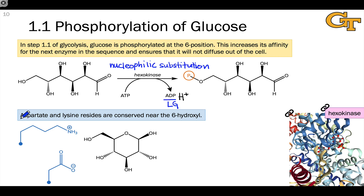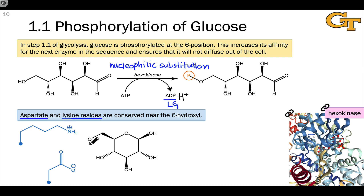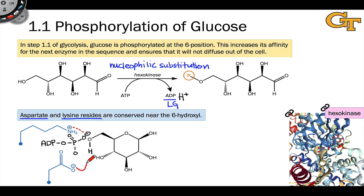One thing we find in hexokinase enzymes across different organisms is the conservation of aspartate and lysine residues in the active site. The enzyme needs to do two things essentially: it needs to steer the phosphate group into the right position, and it needs to increase the nucleophilicity or Lewis basicity of the six-hydroxyl group. The positively charged lysine residue is attracted to the terminal phosphate group of ATP — along with many other ionic and hydrogen bonding interactions — that facilitate the binding of ATP in the appropriate position inside the enzyme's active site. This lysine residue, very close to the glucose reactant, really brings that phosphate into the right position. At the same time, the conserved aspartate residue increases the nucleophilicity of the six-hydroxyl, facilitating nucleophilic attack by that oxygen on the electrophilic terminal phosphorus of ATP.